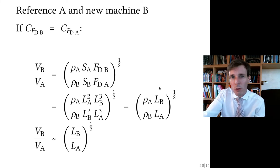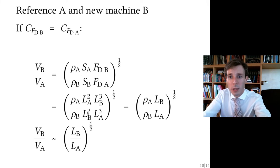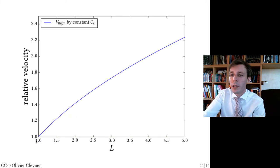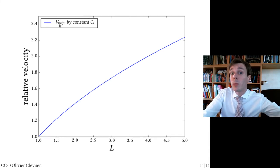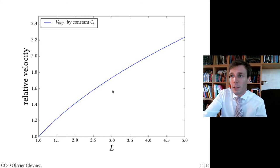So velocity grows together with the square root of length. All right, this is not too bad. Let's plot it. If you plot it, you see this. As you grow the length from factor one to, say, factor three, then the V-flight, the velocity at which you need to push the airplane so that it will fly, this velocity when you have tripled the size has grown by about 70%. Okay?